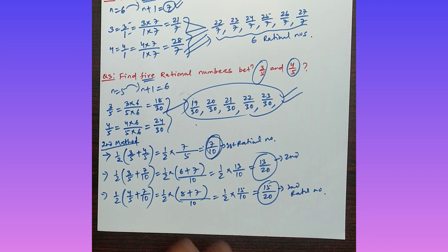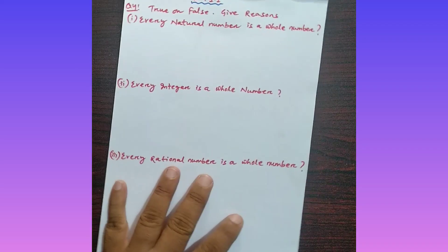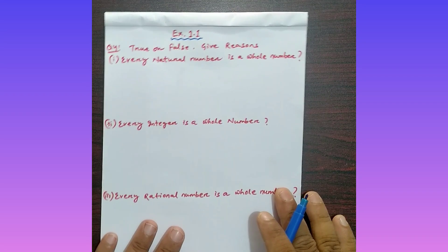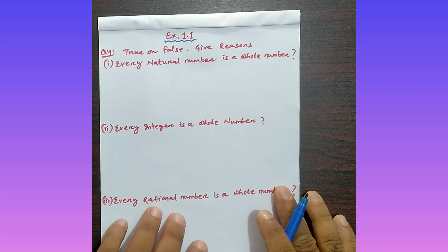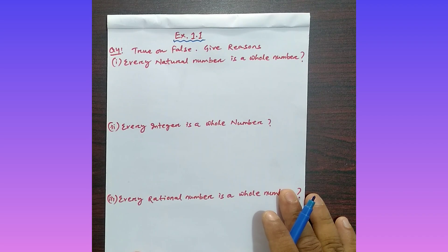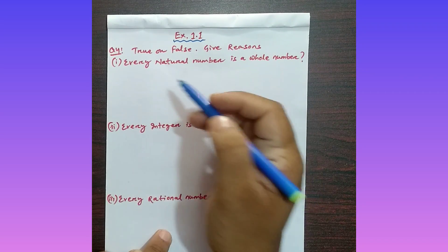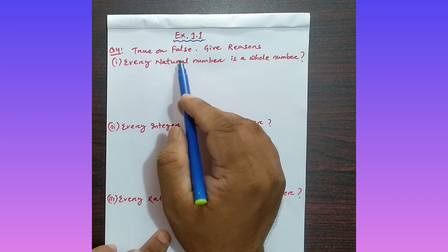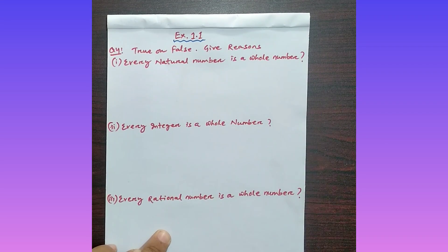Now question number four. The question asks you to check statements and tell whether each is true or false, giving proper reasons. Statement (i): Every natural number is a whole number.